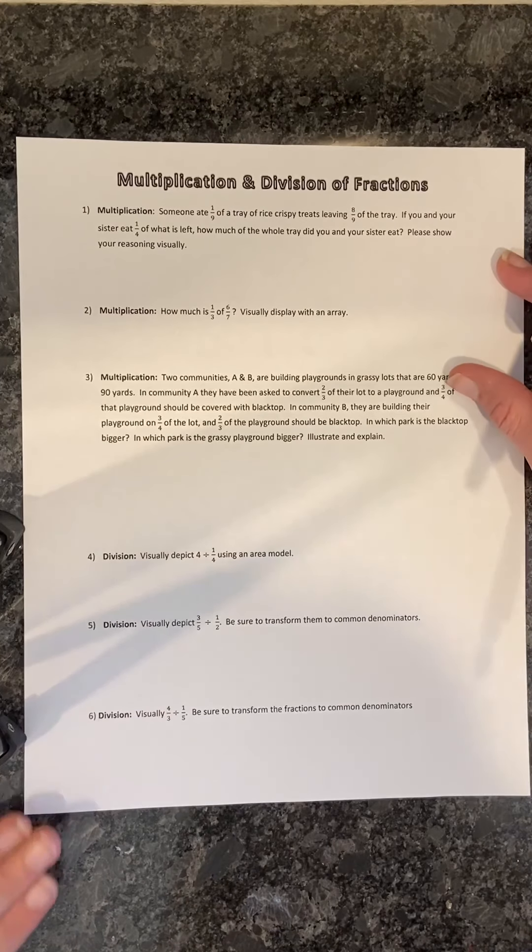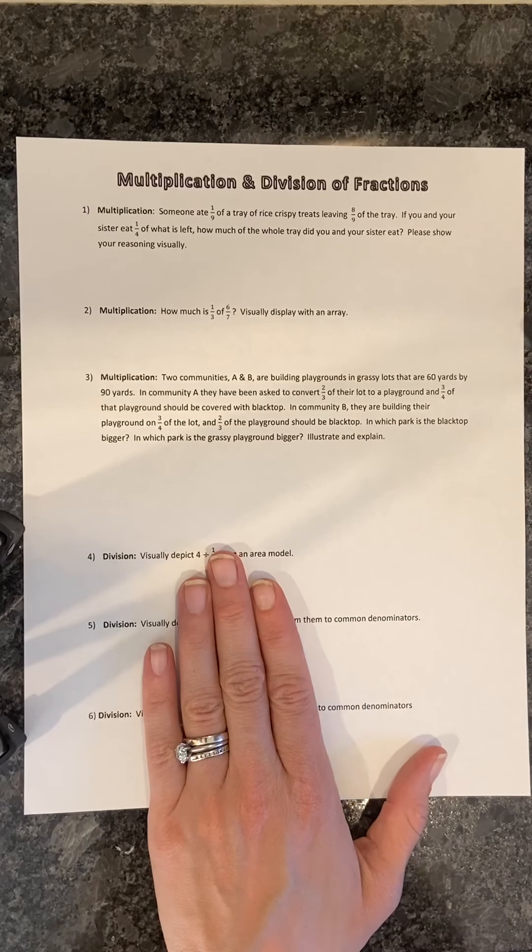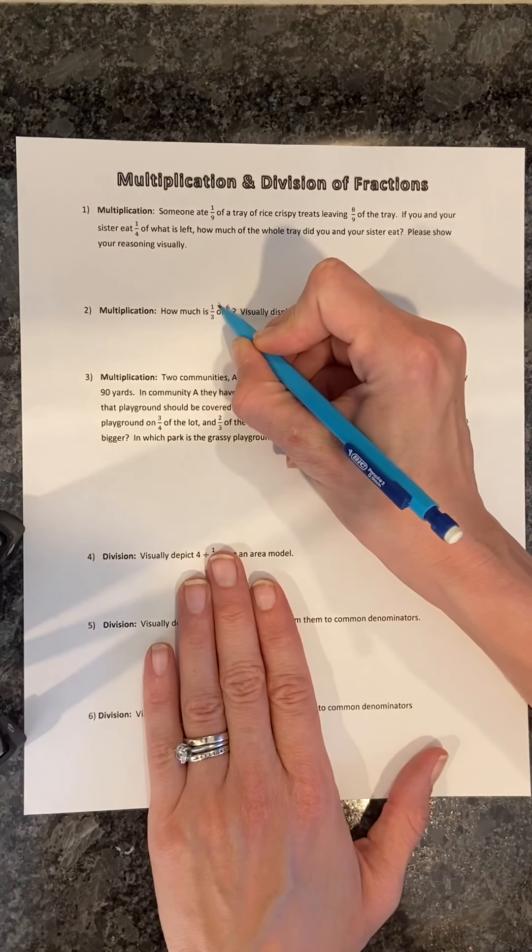We did the first one in class. The second one says, how much is one-third of six-sevenths? And they say visually display with an array. We know that of represents times.